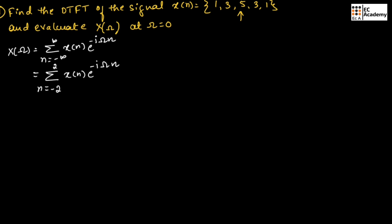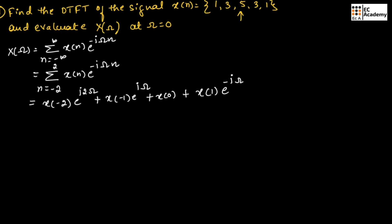Now let us substitute different values of X of n from minus 2 to 2. At n is equal to minus 2, we get X of minus 2 exponential to the power of j 2 omega; at n is equal to minus 1, we get X of minus 1 exponential to the power of j omega; at n is equal to 0, we get X of 0; at n is equal to 1 and 2 similarly. We know X of minus 2 is 1, X of minus 1 is 3, X of 0 is 5, X of 1 is 3, X of 2 is 1.